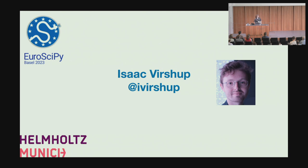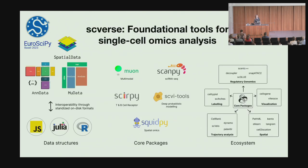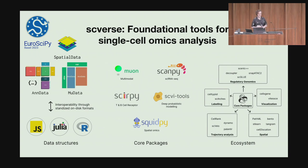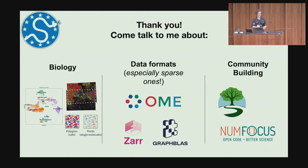Hey, everyone. I'm Isaac, a research software engineer at Helmholtz Munich, representing the Scverse project — an open source consortium based around single-cell and spatial omics analysis. On the software side, we are based around shared data structures able to store dense arrays, sparse arrays, and dataframe-like data. These can be saved with HDF5 and Zarr to disk and read from other languages. There are core packages that create and work with these structures, and an ecosystem with hundreds of community-built packages. Come to my poster if you want to talk about biology, data formats, sparse data formats, or community building in open source ecosystems.